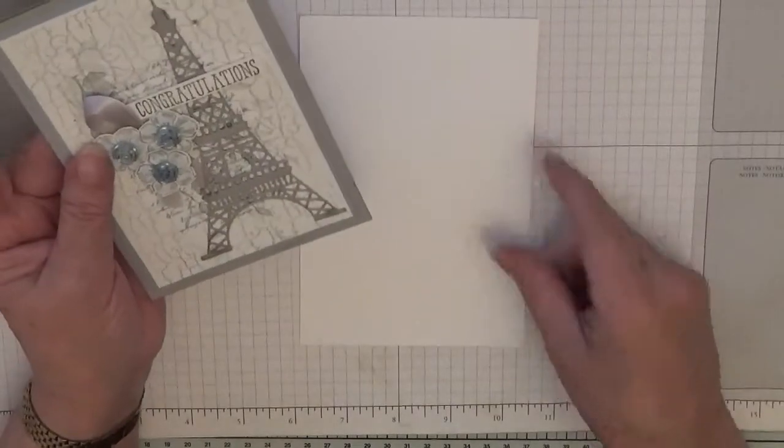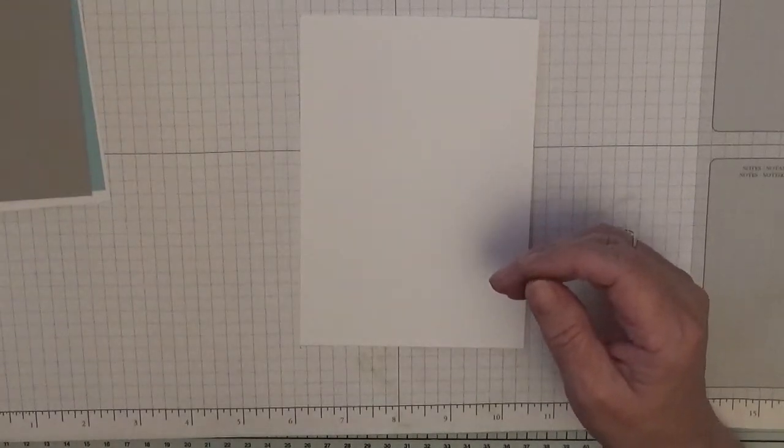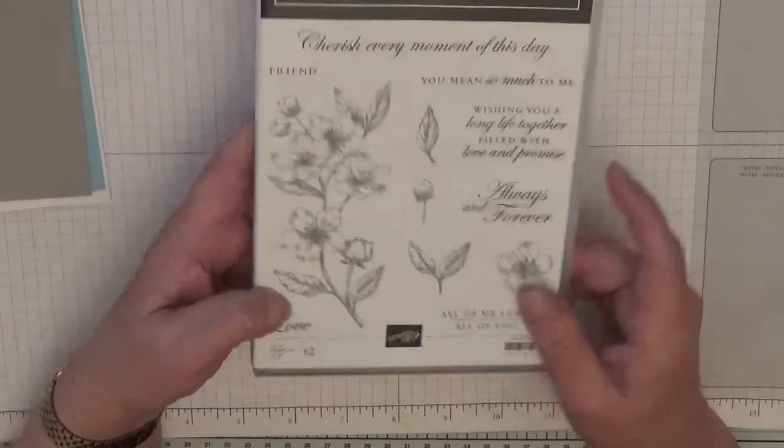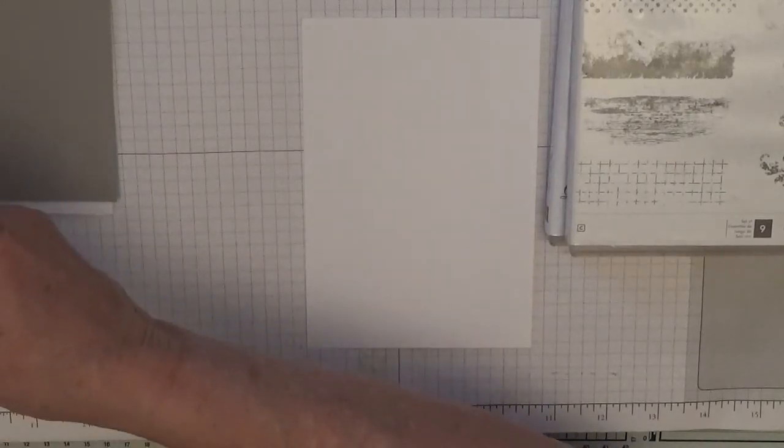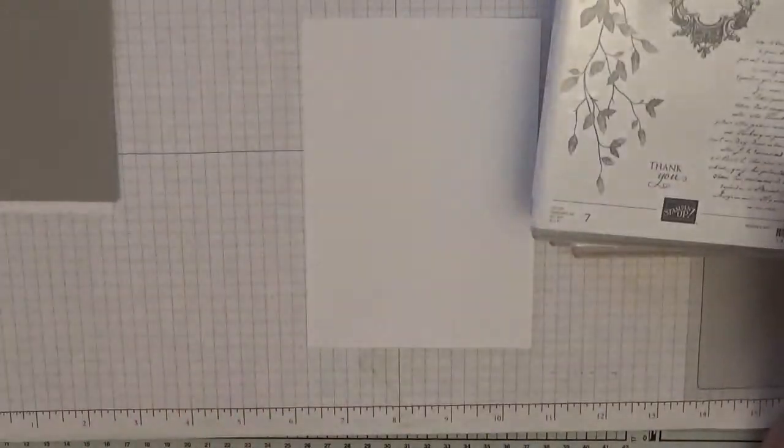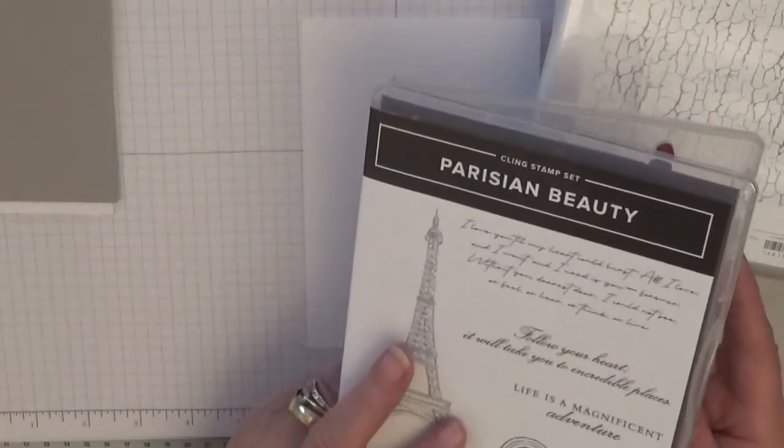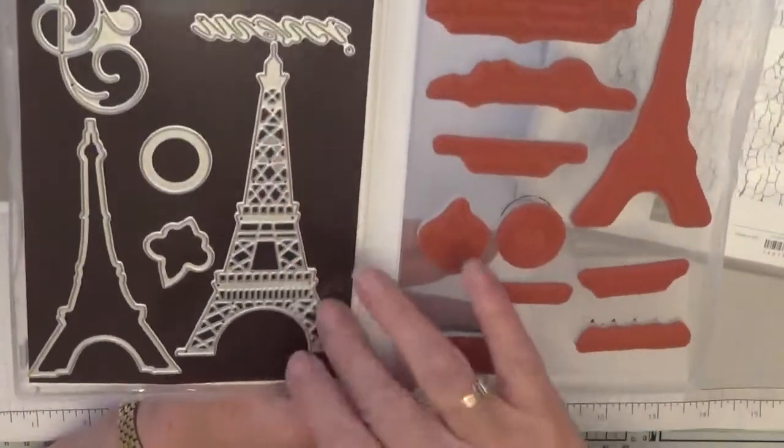The stamps I'm using are for the flowers, Forever Blossom, and we're just going to use that flower there. Timeless Texture and we're going to use that stamp for around the edge. Very Versailles, I'm going to be using the script for the background. I'm using Crackle Paint. And for the Eiffel Tower just using the dies from the Parisian Beauty, and we're just going to cut, well I have already cut an Eiffel Tower.